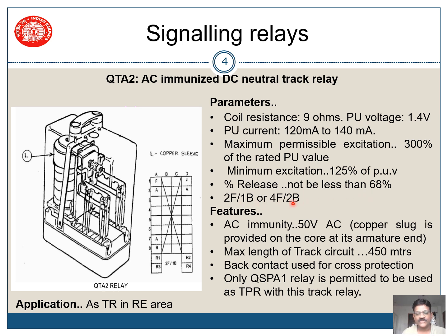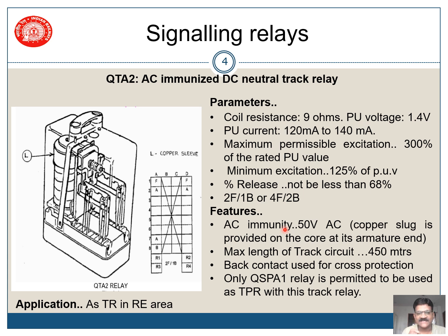4F2B relays are nowadays being used. The features of this relay include AC immunity of 50 volts. A copper slug is provided in the core at its armature end to achieve this feature, by which the relay becomes slow to pick up. Regarding AC immunity: when AC voltage is applied to the relay, up to 50 volts in track relays and up to 300 volts in other Q-style line relays. So this track relay has AC immunity only up to 50 volts.